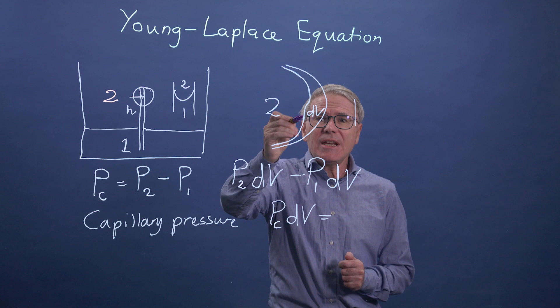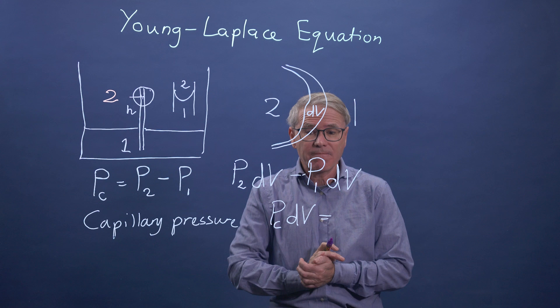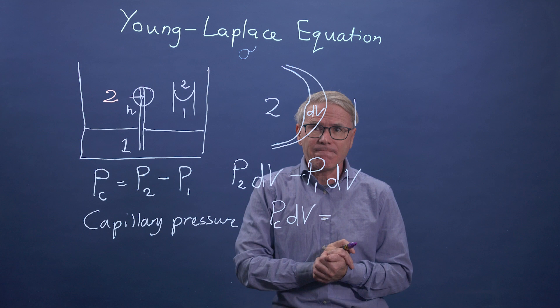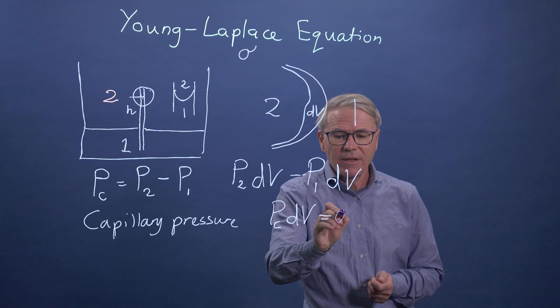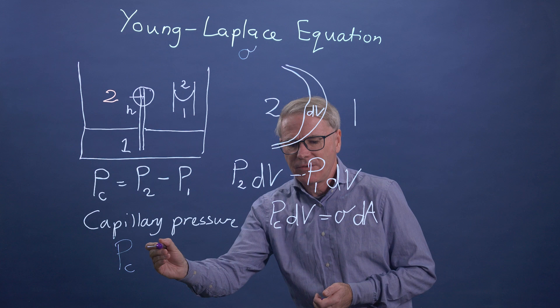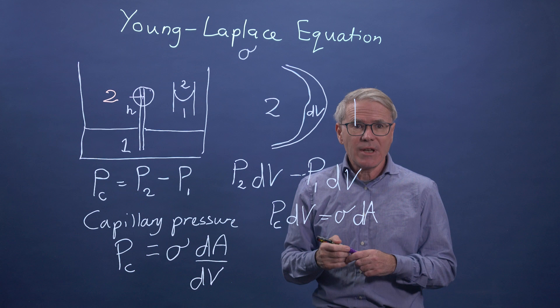By putting in work, we've created more interface between the two fluids. The interfacial energy or interfacial tension σ is an energy per unit area, so by putting work in we increase the surface energy. The work done equals σ times the change in area. The capillary pressure can therefore be written as interfacial tension times the change in area divided by the change in volume.